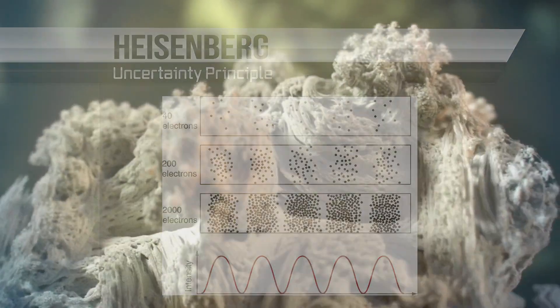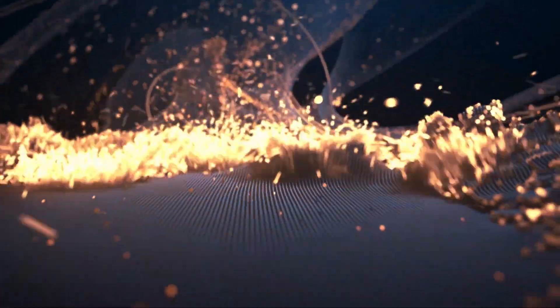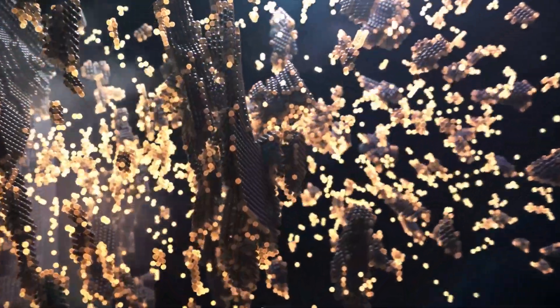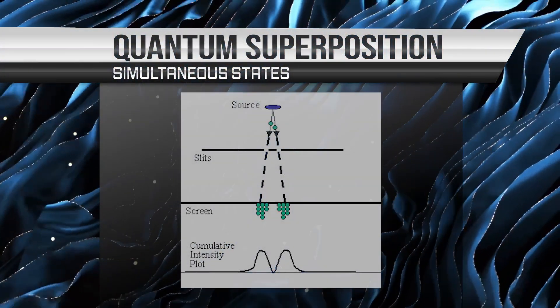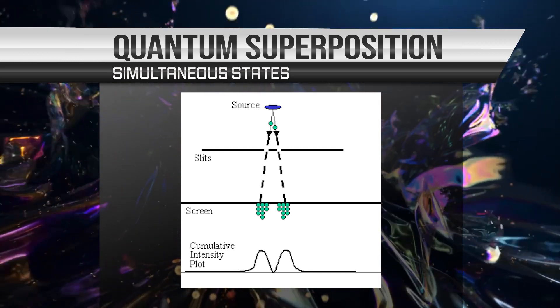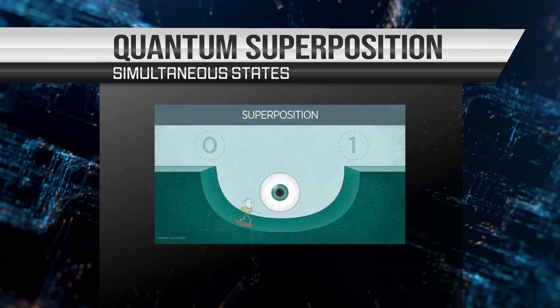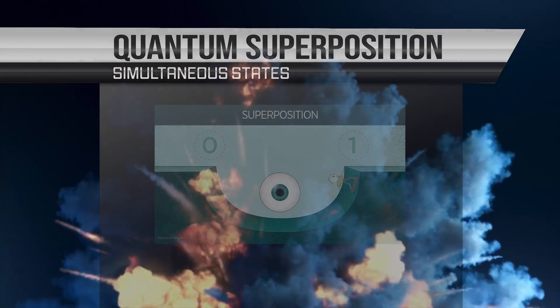In quantum physics, the concept of superposition refers to the ability of a quantum object to exist in multiple states at the same time — this is known as quantum superposition. For example, an atom can exist in multiple energy levels at the same time, or a particle can be in multiple locations simultaneously. This concept is difficult to understand using classical physics, which states that objects can only exist in a single state at any given time.